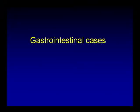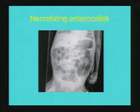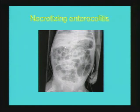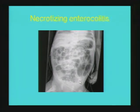Starting with acute gastrointestinal conditions. The first case is necrotizing enterocolitis, a very common neonatal condition, demonstrated by this case showing symmetric distension of air-filled bowel loops and intramural air outlining the bowel segments in the right upper quadrant. You can appreciate a sliver of air outlining the bowel loop in the right upper quadrant, intrahepatic air outlining the portal venous system, and a summary of necrotizing enterocolitis in a neonate.